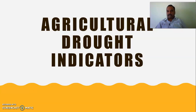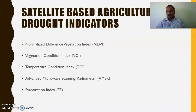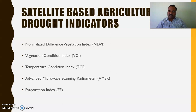Coming to the agricultural drought indicators, which are extensively used all across the globe, we have five agricultural drought indicators: NDVI — the normalized difference vegetation index — which is an exclusively used indicator globally; the vegetation condition index, which depends upon NDVI; the temperature condition index, which monitors temperature changes; the advanced microwave scanning radiometer; and the evaporation index. Based upon these five indicators, there will be an assessment of agricultural drought.